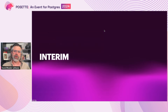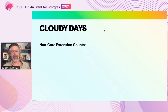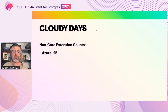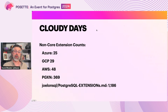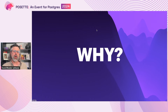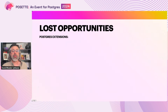Things have not stood still in the rest of the Postgres extension ecosystem. Chief among the changes has been the emergence of Postgres-as-a-service providers. These services provide and curate extensions for their users. As of this spring, Azure provides 25 non-core extensions, GCP provides 29, and AWS provides 48. PGXN, meanwhile, has 369 distributions with almost 400 extensions. But those are just a fraction of those available — Joel on SQL has inventoried almost 1,200 publicly available extensions in a wide variety of locations, especially on GitHub. This leads me to wonder: why has uptake been so modest? Despite the best of intentions, some opportunities were never met.